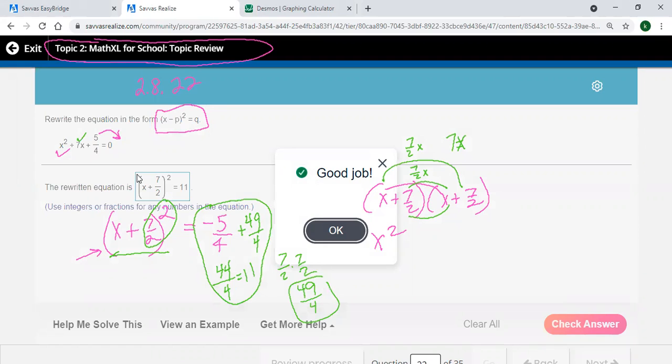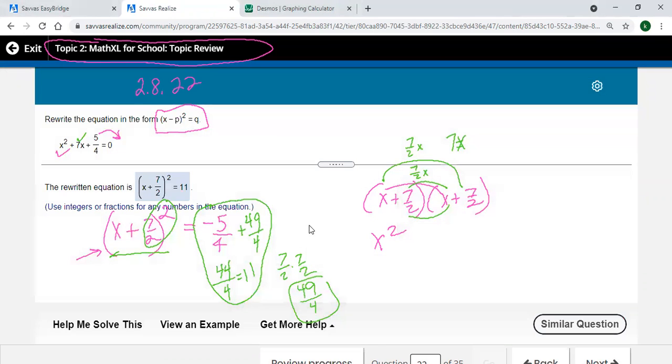So hopefully you followed all of that. If not, go back and slow it down. It was just whatever this number is right here, you put it over 2, and that's what goes there. And then you just have to, after you square that, add that to both sides and subtract. Don't forget to subtract this c term to the other side of the equation.